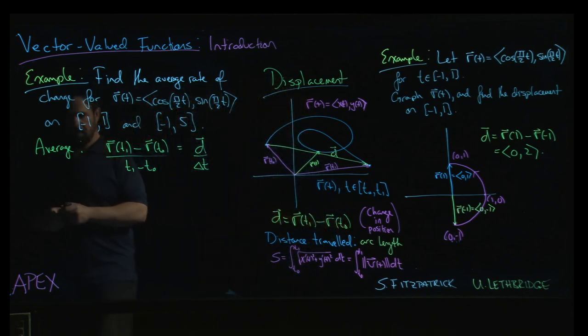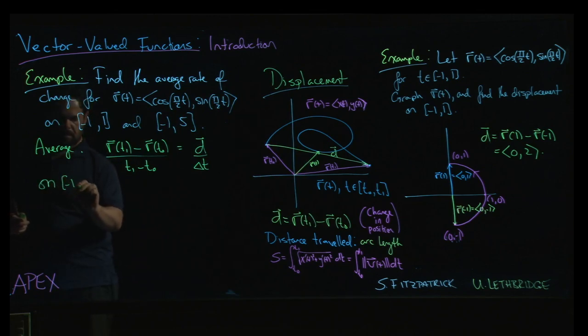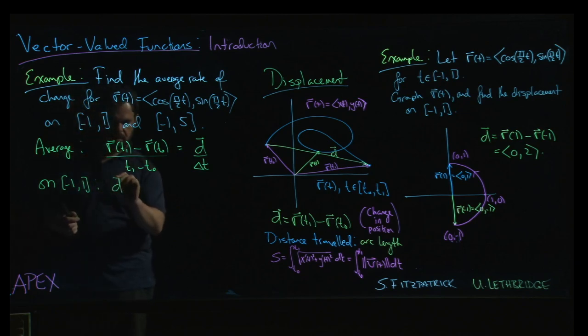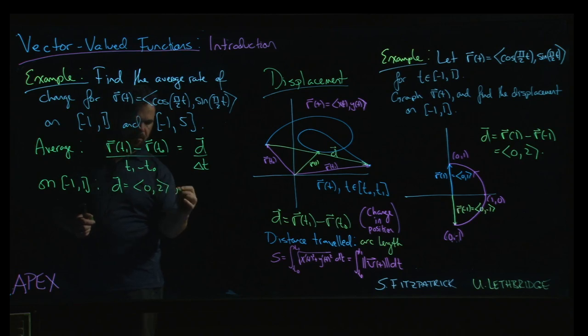So for the first interval, -1 to 1, we know that the displacement is, sorry, (0,2). We know that delta t, 1 minus -1, is 2.